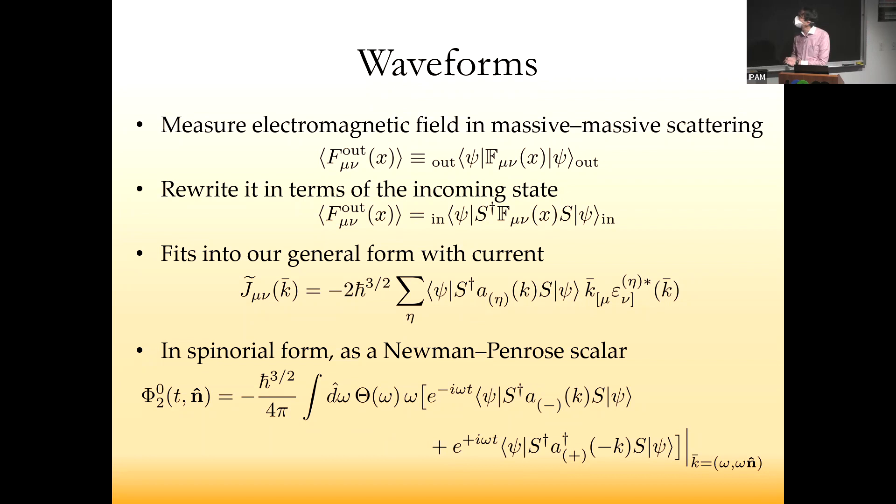We can write down in terms of a current generated in the scattering region—the number of indices is double what's carried by the appropriate field, so two for electromagnetism and four for gravity. We write down a radiation observable and take the large-distance behavior. The coefficient of the leading term is the waveform, which I've written in the time domain. You can do spectral functions and look at it in frequency domain—both are useful. To measure the waveform in the QED case, we measure the electromagnetic field strength.